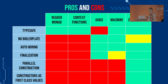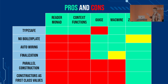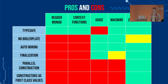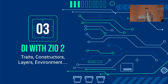I created a nice table showing the pros and cons of each approach. Reader Monad and context functions don't solve the problem of wiring up the dependency graph — that's why there are lots of reds there. Guice is not a type-safe framework, and MacWire just has less power than ZLayers — for instance, you can have finalization in MacWire, but it only works with instances of Cats Resource, not with ZLayer scopes. According to the table, it looks like ZLayers are absolutely the best.